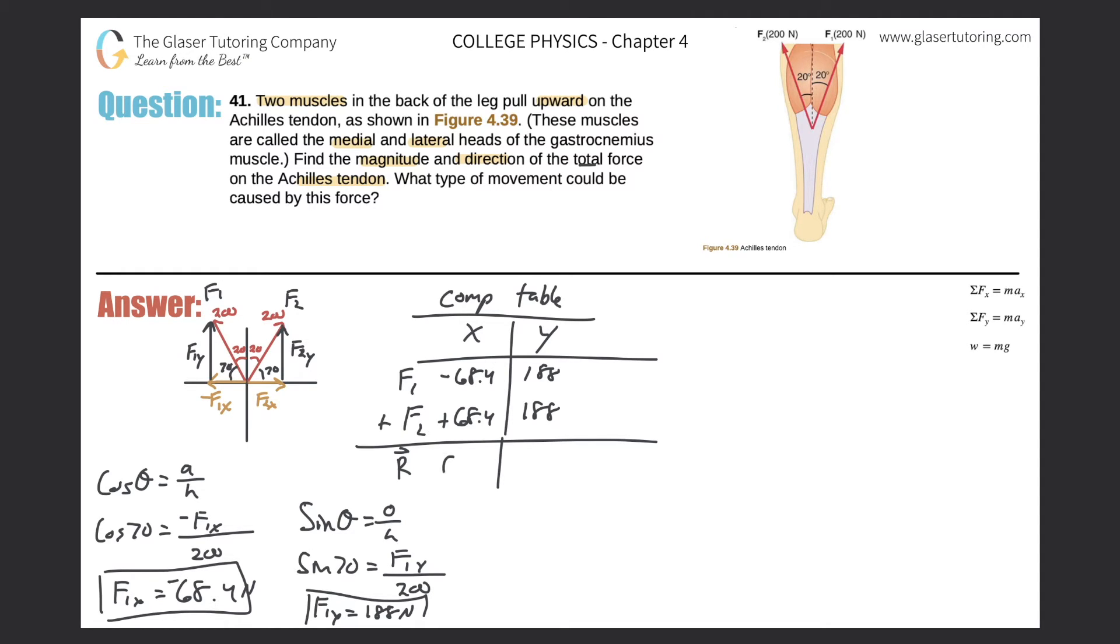Add these together now. That becomes a zero, which definitely makes sense. And then we just have to take this now and add these two together. So what do we get there? 188 times 2 is 376. So 376 newtons.